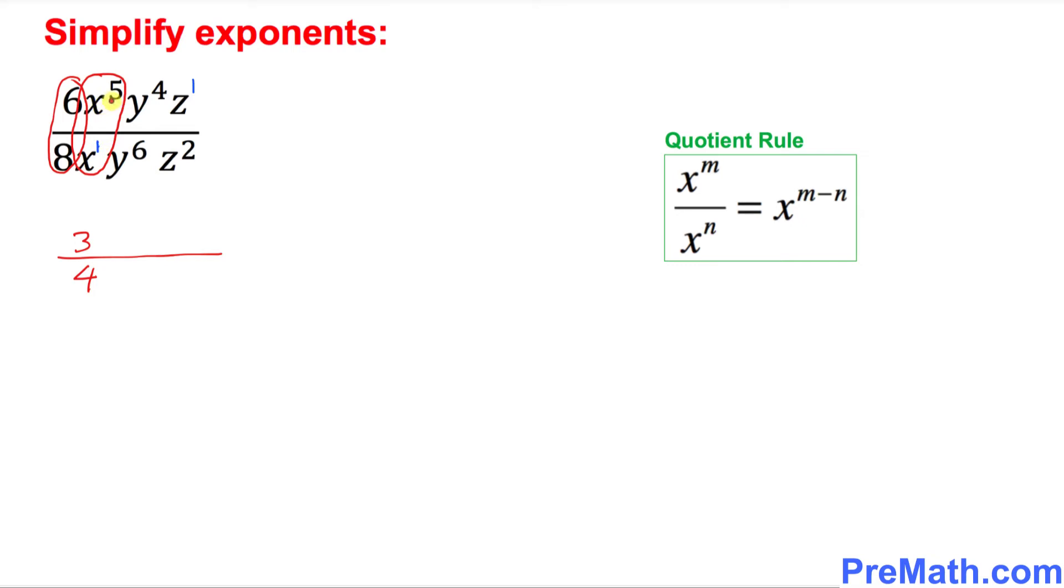Ask yourself, which one has the highest power, on the top or at the denominator? We can see that x power 5 at the top has the highest power. So x is going to stay at the top. Now you subtract their powers: 5 minus 1.